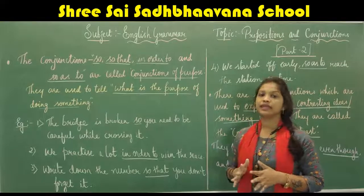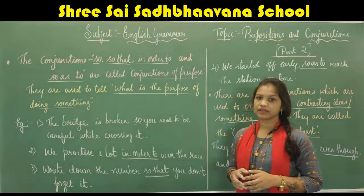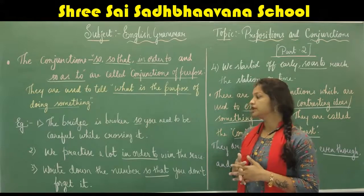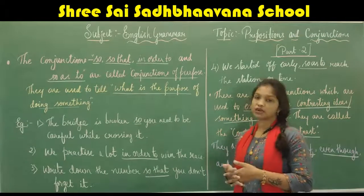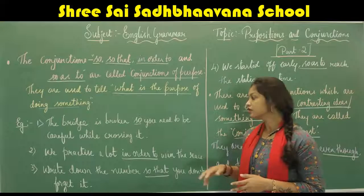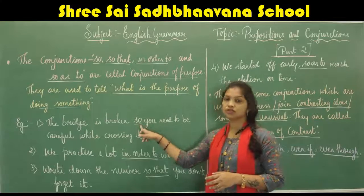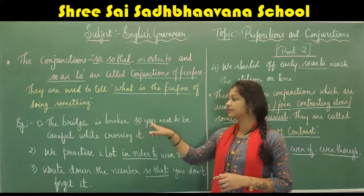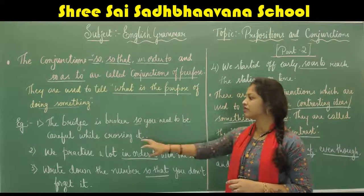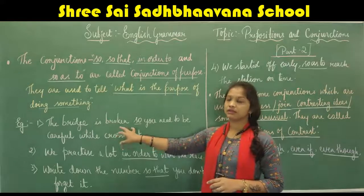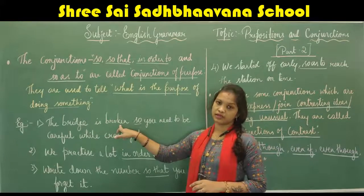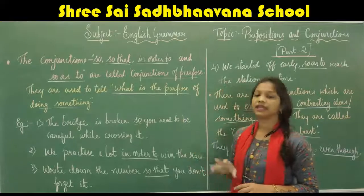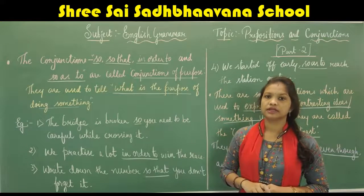Example: 'The bridge is broken, so you need to be careful while crossing it.' Here we have used the conjunction 'so'. It is telling the purpose — why we have to be careful, because the bridge is broken.